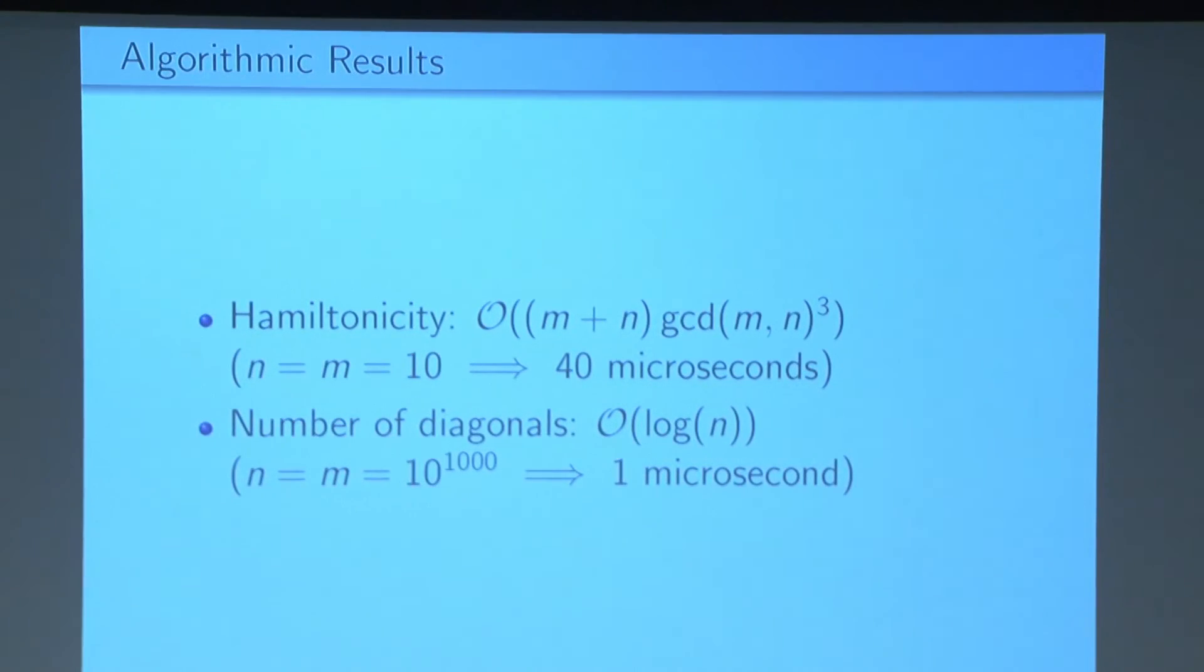Okay, back to some algorithmic results. We found a pseudo-polynomial time algorithm to determine if a given checkerboard is Hamiltonian. So, this means that it's polynomial in the values N and M. And so for a 10 by 10 checkerboard, it will take 40 microseconds to give you an answer. That's a lot better than 10 to the 106 years and even than three days. And we have a polynomial time algorithm to determine the number of diagonals in a given checkerboard. So, polynomial time means that it's polynomial in the length of our input, in the number of digits required to write down N and M. So that will finish in under a second for pretty much any imaginable input.